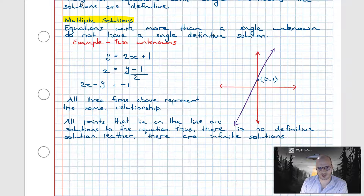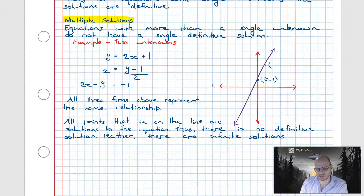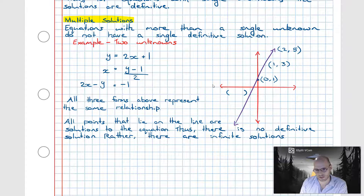Expressing this graphically, the solutions to y = 2x + 1 are any point lying on the line. When x = 0, y = 1; when x = 1, y = 3; when x = 2, y = 5. All of these points are solutions, so there's no single definitive solution — there are multiple.